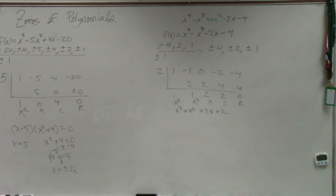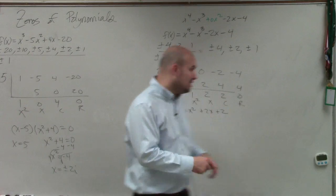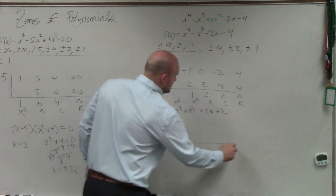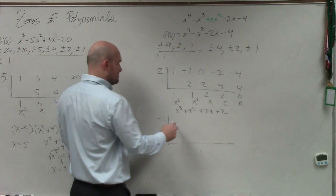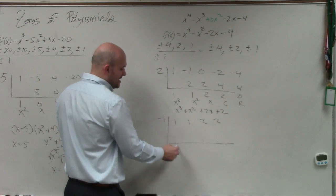So what we need to do is, was there another real zero that we found? Negative 1. So what you'll do is, if you take negative 1 and then take this quotient and divide it by the other zero, 1, 1, 2, 2, then watch what happens.